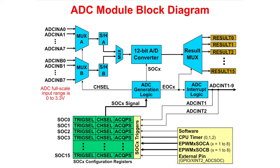The ADC module can operate in sequential sampling mode or simultaneous sampling mode. In simultaneous sampling mode, the channels selected on the A multiplexer will be the same channel on the B multiplexer. The ADC interrupt logic can generate up to 9 interrupts. The results for SOC 0 through 15 will appear in result registers 0 through 15.